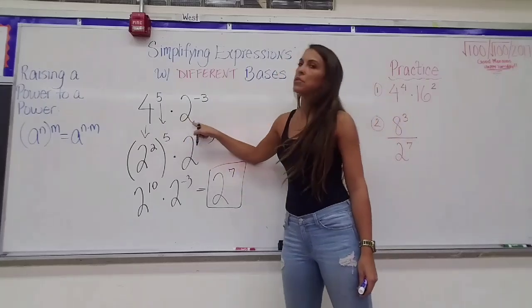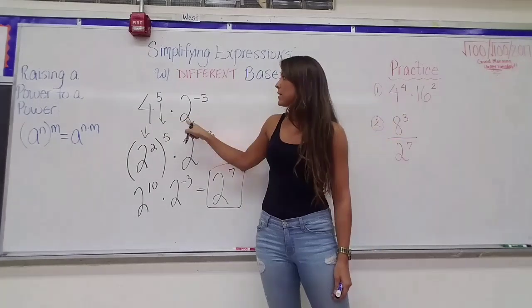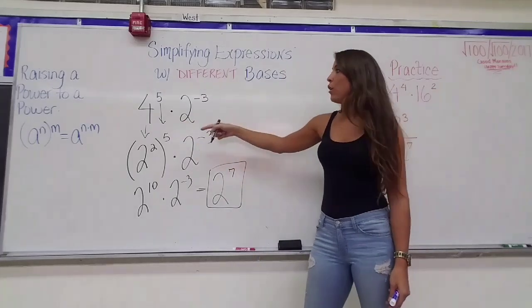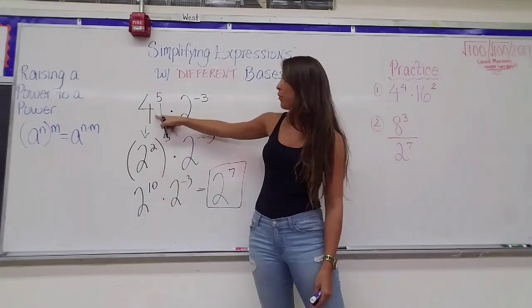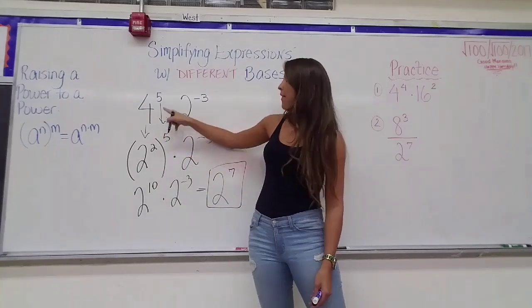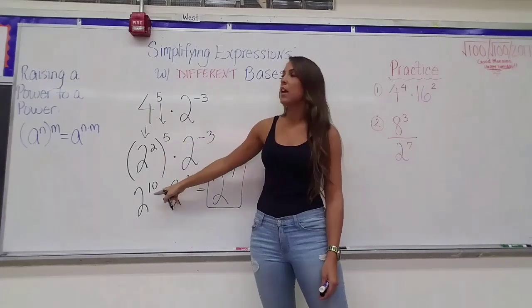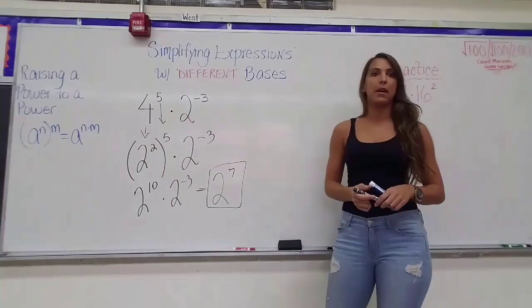So one more time, if the bases are different, you want to see if you can get them the same. So getting them the same means trying to rewrite one of them as the power of the other one. 4 is the same as 2 squared, so I'm just substituting. Instead of writing 4, I'm writing 2 squared, because I need a 2. And then I'm bringing down that 5, I apply power to power, which tells me to multiply my exponents, and now I can multiply the expressions because they have the same base.